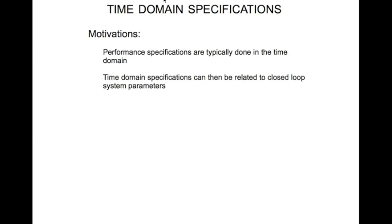Time domain specifications can then be related to closed loop system parameters. What you do is you take a block diagram and find the transfer function. Now the transfer function will be a function of controller parameters or system parameters. You can relate those system parameters to the specifications. Based on the specifications you find values for the system parameters. That is essentially controller design.